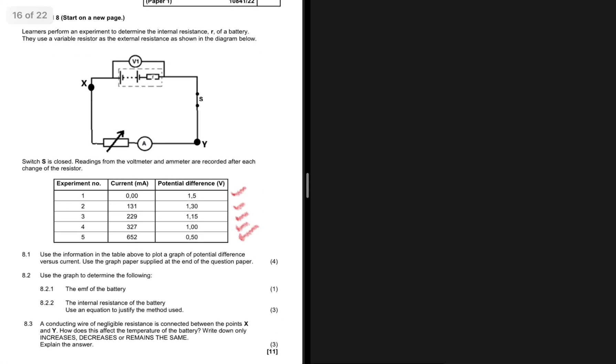The first question 8.1 is saying use the information in the table above to plot a graph of potential difference versus current. Use the graph paper supplied at the end of the question paper. We need V external versus current.